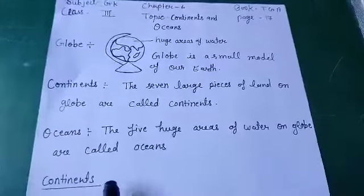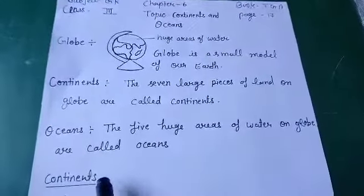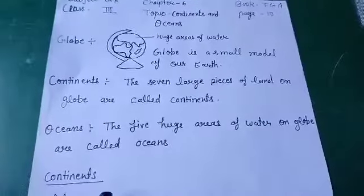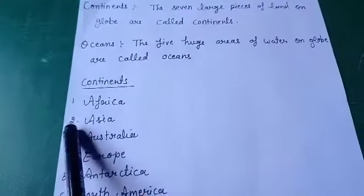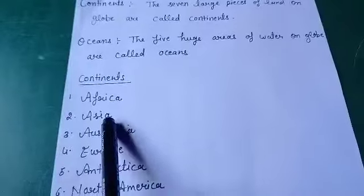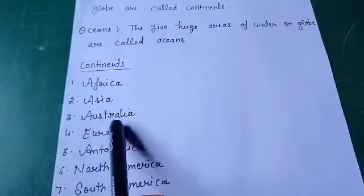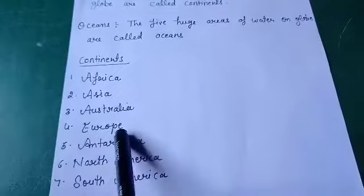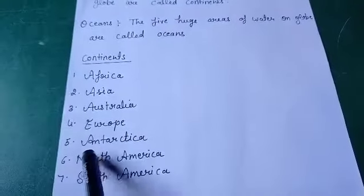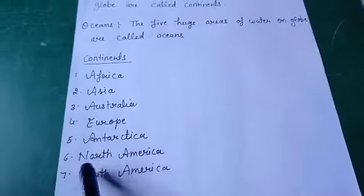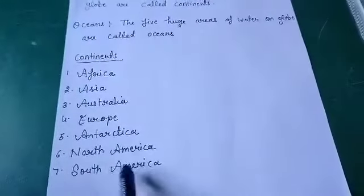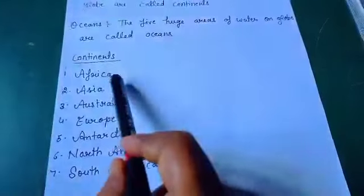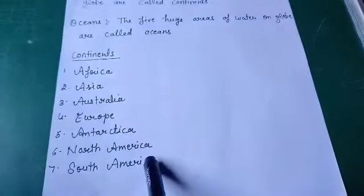How many continents do we have? We have seven continents. In this chapter we will learn their names. First is Africa. Second is Asia. Third is Australia. Fourth is Europe. Fifth is Antarctica. Sixth is North America. And seventh is South America. These are the seven continents.